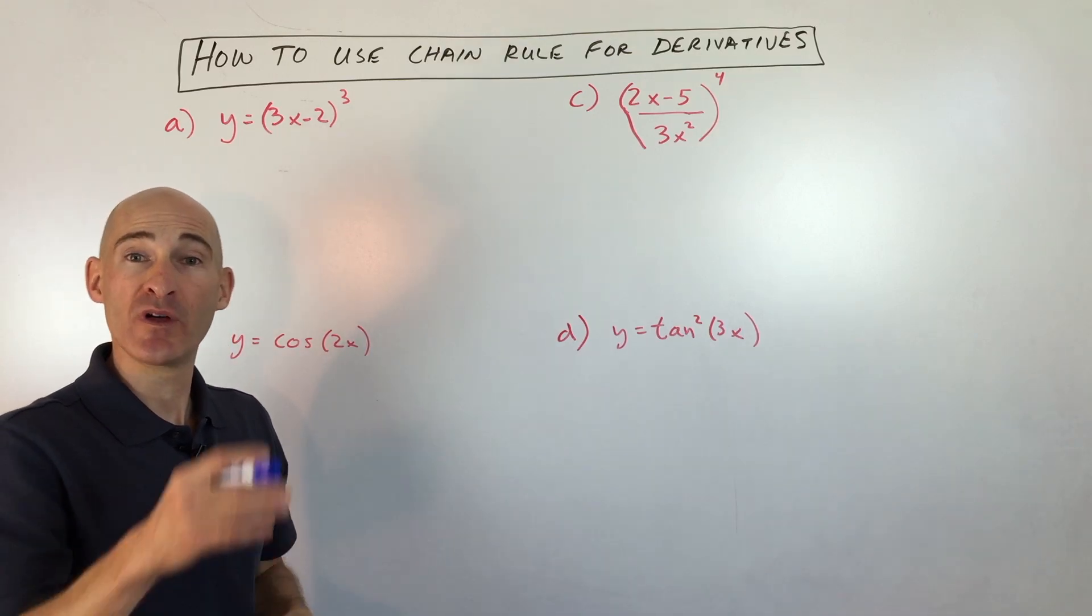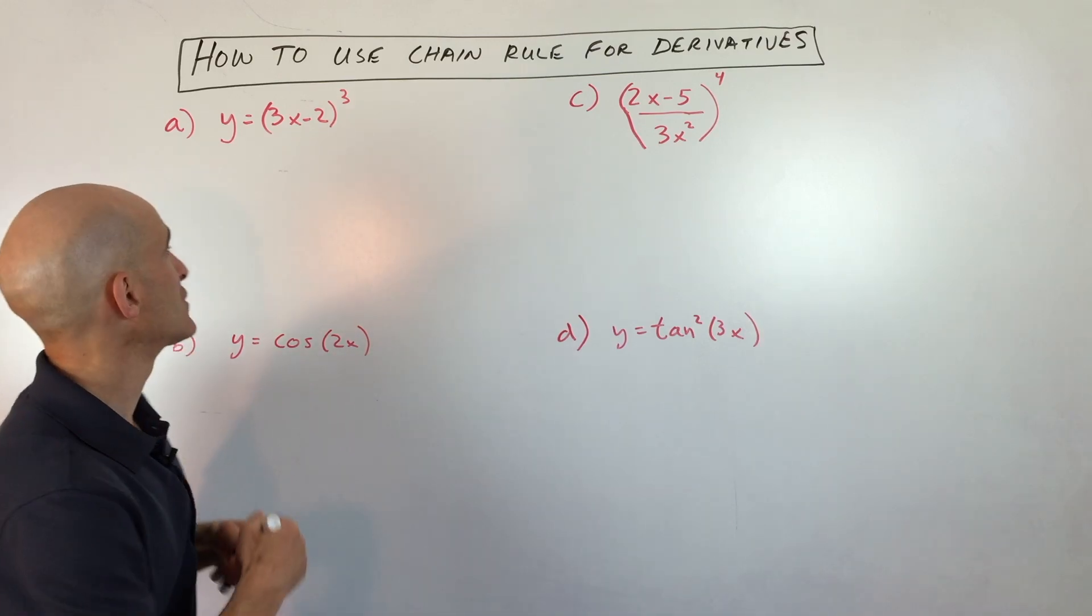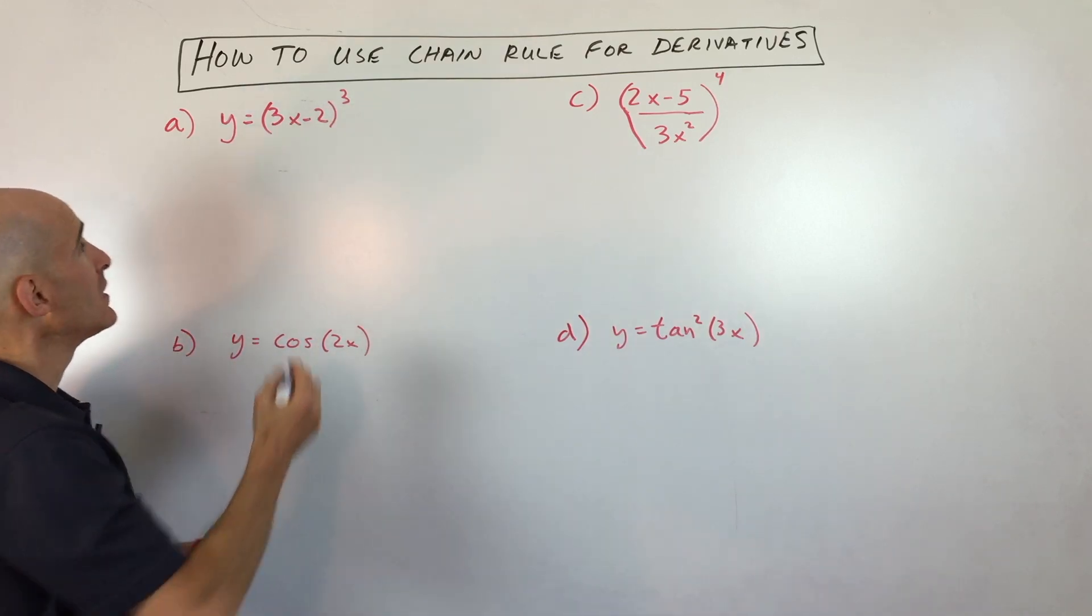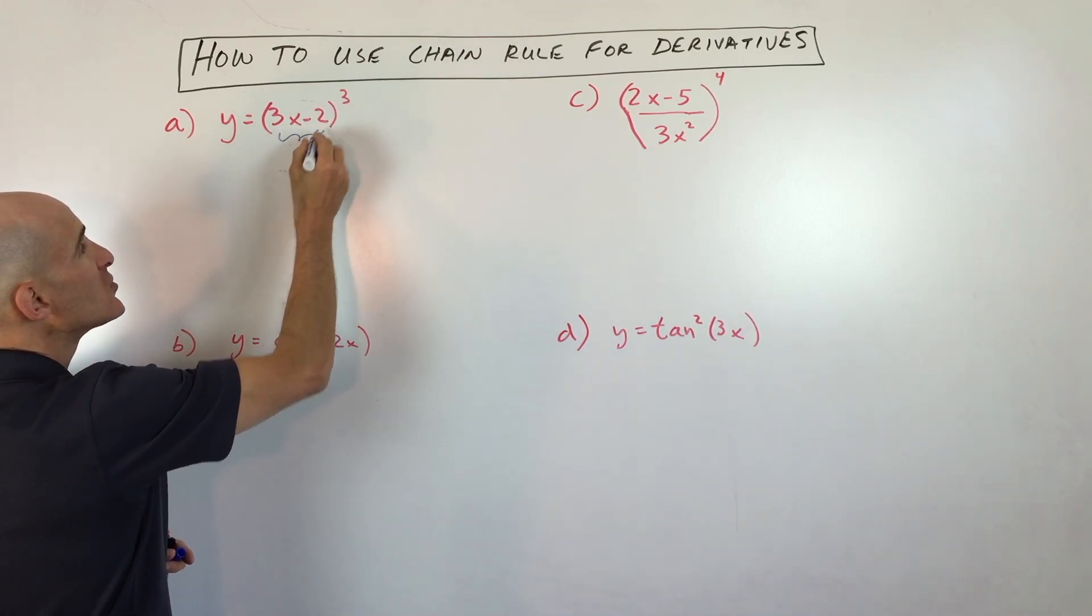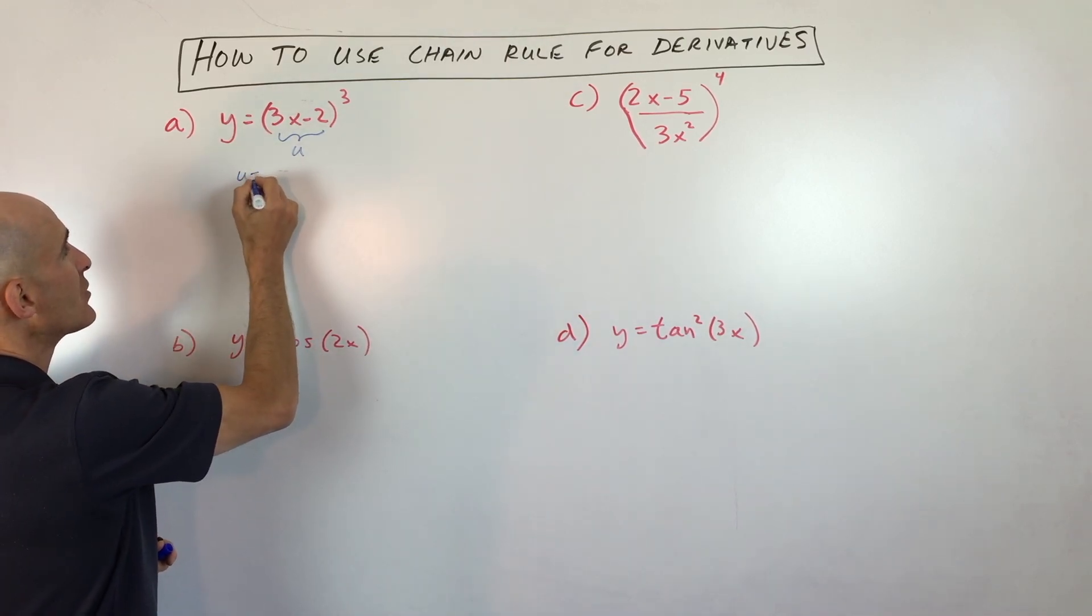I'll show you what I mean in this first example and then I'll show you some shortcuts to do it more quickly. In this first example we've got y equals (3x minus 2) cubed. We're going to do a u substitution. We're just going to say u equals 3x minus 2.